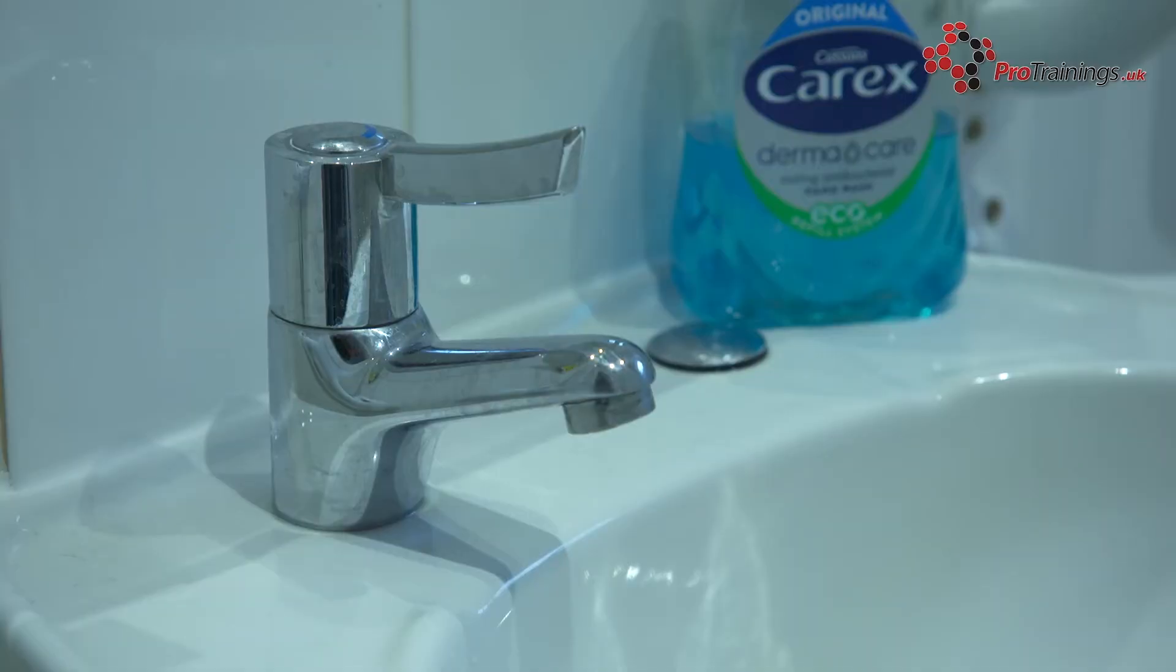The technique for washing with alcohol hand gel is very similar to that of washing with the sink or basin. However, there are two main key differences.